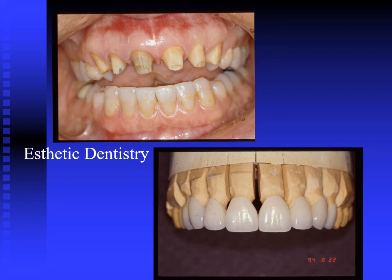Looking at this top slide, we see the maxillary anterior teeth have been prepared to receive porcelain jacket crowns, and these are the laboratory versions of the jacket crowns shown in the lower picture. I'd like you to consider whether these are ideal anatomical representations of the anterior teeth. I would say they're pretty good, but there may be some features that could be improved.